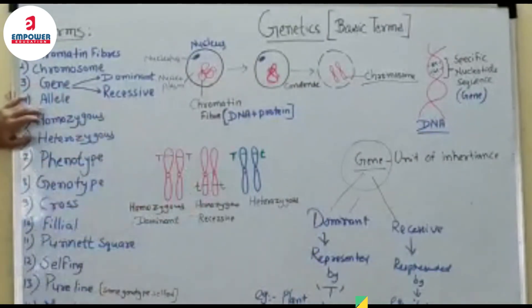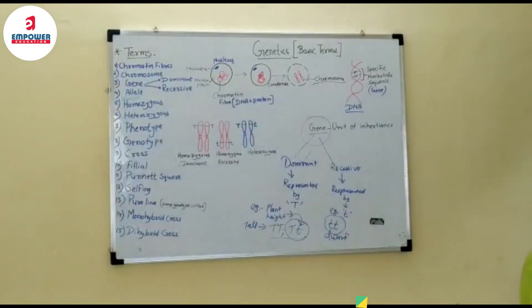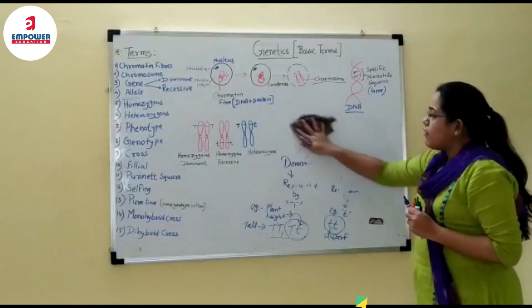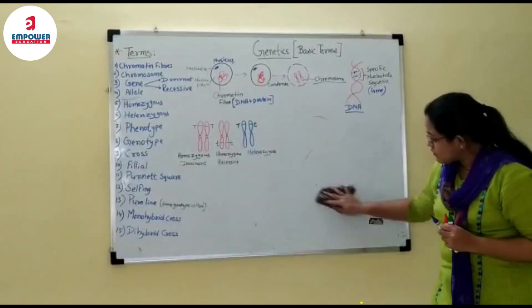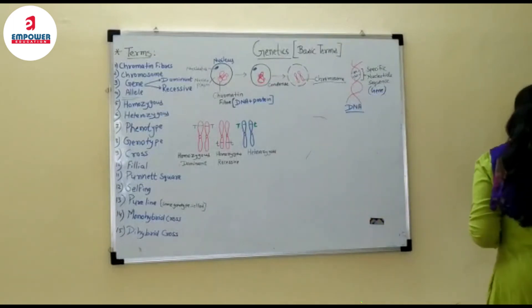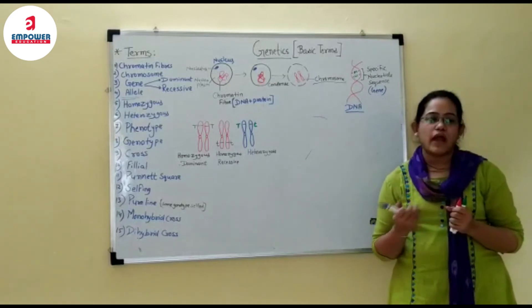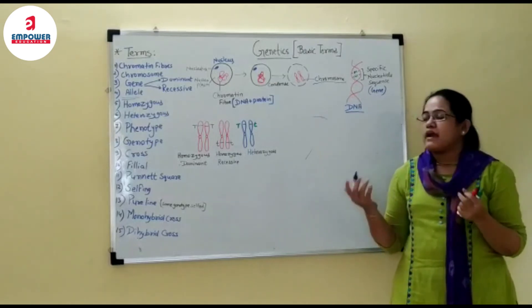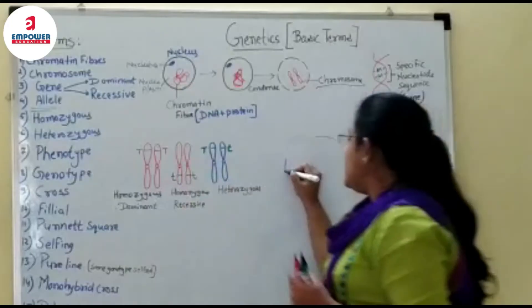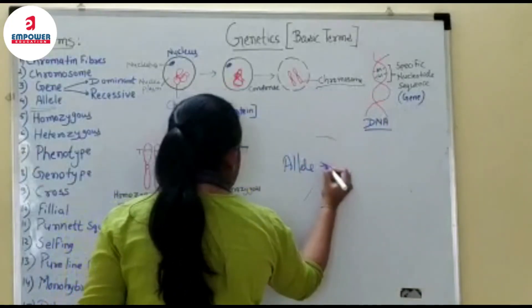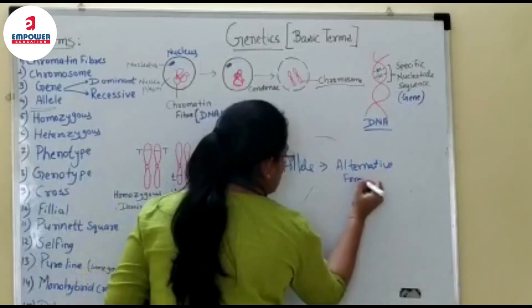Now, what are alleles? Alleles are basically the alternative forms of genes. For example, some people have black eye color and some have brown eye color. Why do they have different eye colors? Because of the alternative forms of a gene. So alleles are basically alternative forms of a gene.